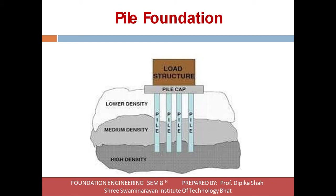In the case where a strata of good bearing capacity is not available near the ground, the foundation of the structure has to be taken deep with the purpose of attaining a bearing strata which is suitable in all aspects. The most common forms of deep foundations are pile foundation, caissons, and cofferdams. Pile foundations are intended to transmit a structural load through the zone of poor soil to a depth where the soil has the desired capacity to transmit the load.